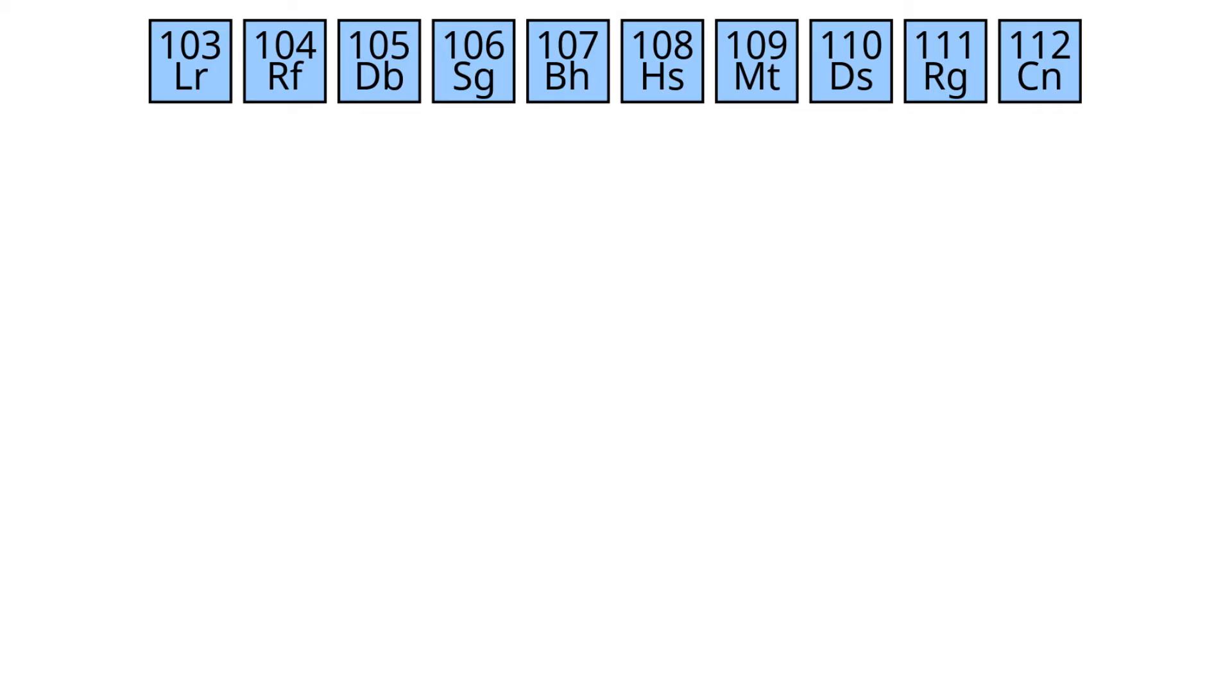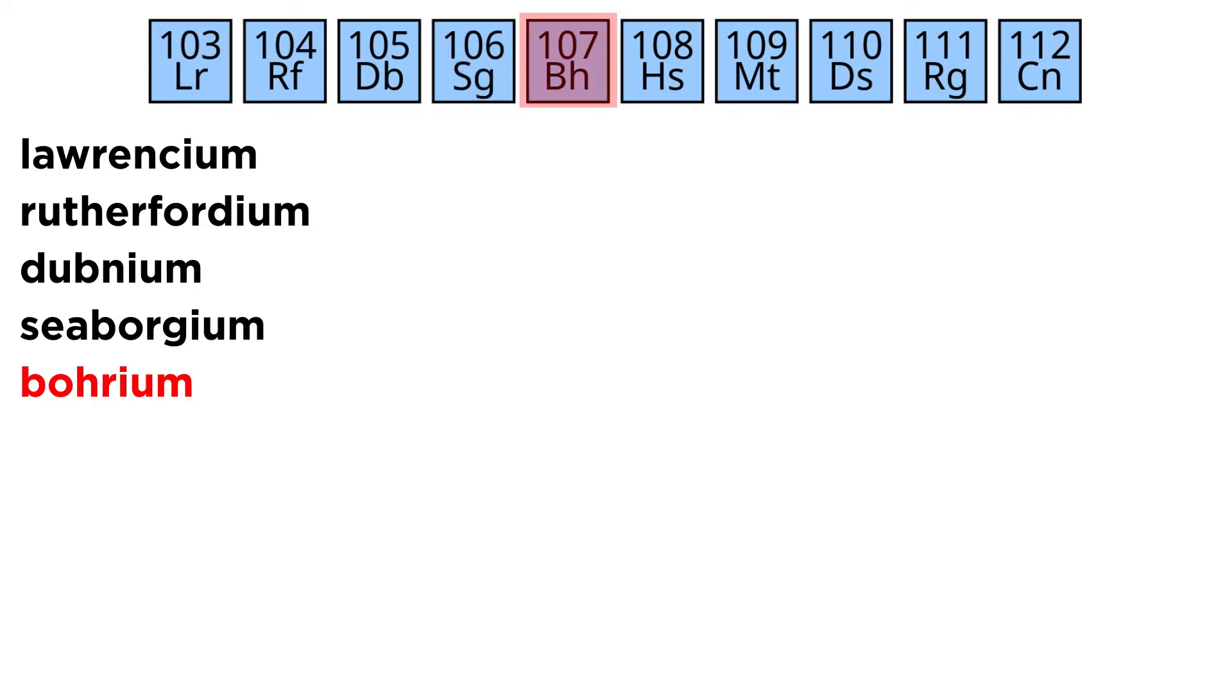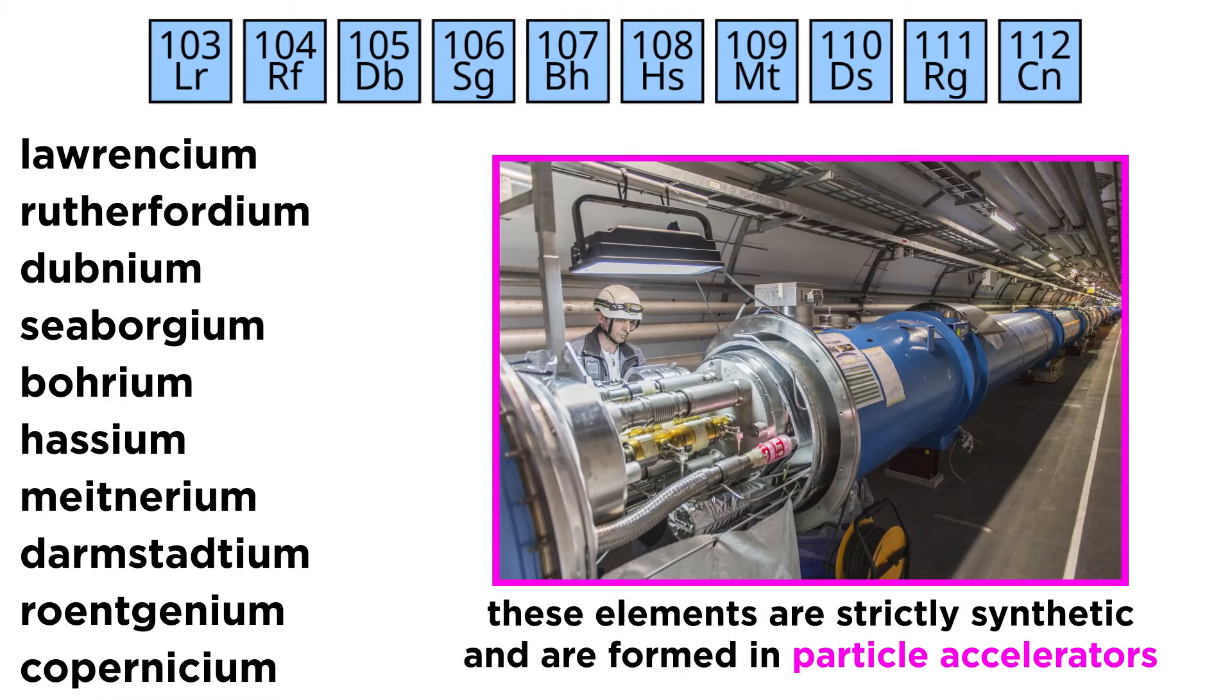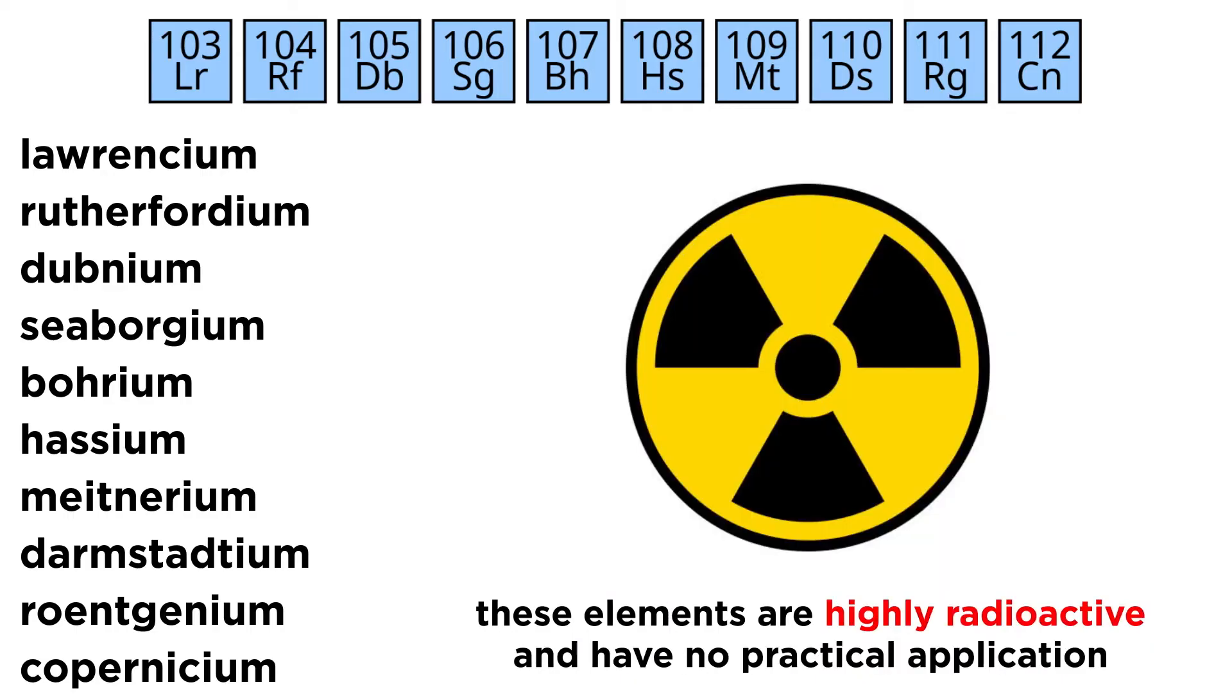And finally, the fourth row in the block, which is part of period seven, includes Lorentium, Rutherfordium, Dubnium, Seaborgium, Borium, Hasium, Mitnerium, Darmstadtium, Rentgenium, and Copernicium. None of these elements occur naturally and are exclusively synthesized in particle accelerators, with only a few atoms having ever been made for most of these elements. They are all highly radioactive and have no application beyond scientific research.